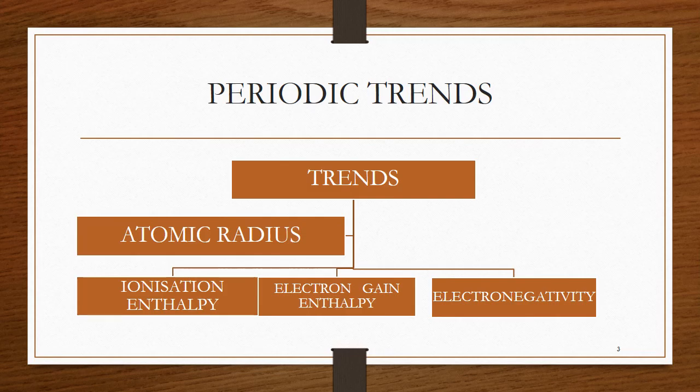Today we are going to learn about the periodic trends involved in the modern periodic table. The main trends we are going to look at are atomic radius, ionization enthalpy, electron gain enthalpy, and electronegativity.